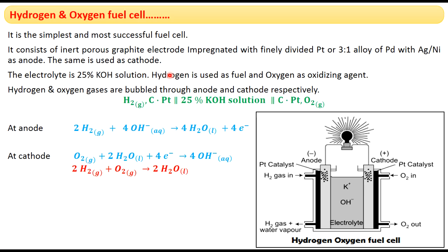The hydrogen-oxygen fuel cell consists of inert porous graphite electrodes thoroughly mixed with finely divided platinum, or a 3-to-1 ratio alloy of palladium with silver, or palladium with nickel. This electrode acts as the anode. The same electrode composition is also used as the cathode — both electrodes have the same composition, using graphite containing pores with a catalyst.